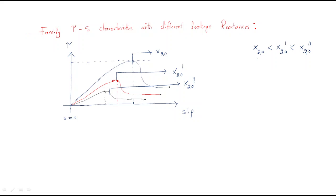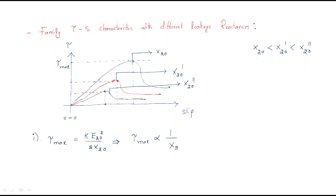Why are these curves shaped this way? First, let's look at the maximum torque value. The maximum torque decreases as leakage reactance increases. The reason is simple: the formula for maximum torque is T_max = k·E2² / (2·X2). This means maximum torque is inversely proportional to leakage reactance, so by increasing X2, the maximum torque decreases.